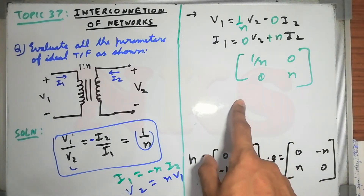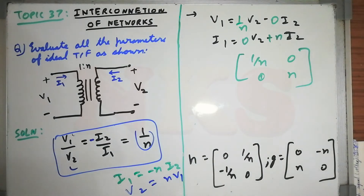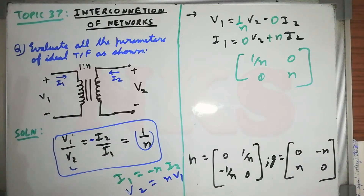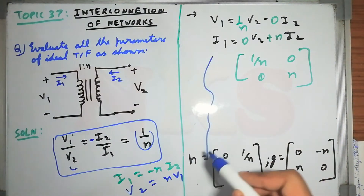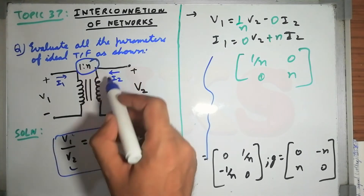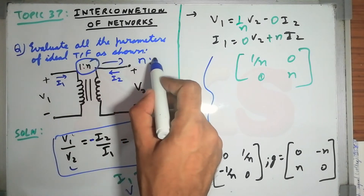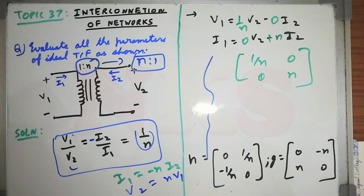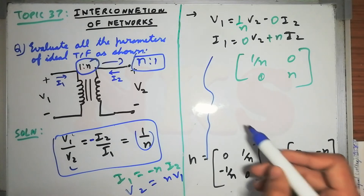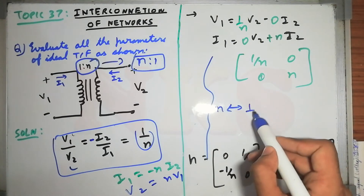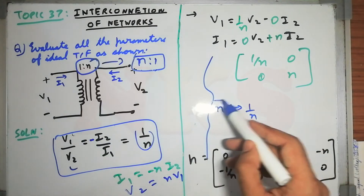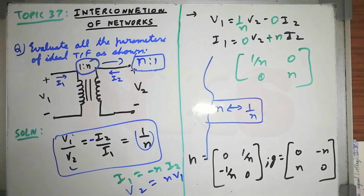For the inverse transmission parameters, I have shown a shortcut in a previous video giving the relation between inverse ABCD and ABCD, so you can find those from there. An important point: all these parameters are valid only for transformation ratio 1:n. If the question gives transformation ratio n:1, either re-derive all parameters or simply replace n with 1/n in each parameter matrix.